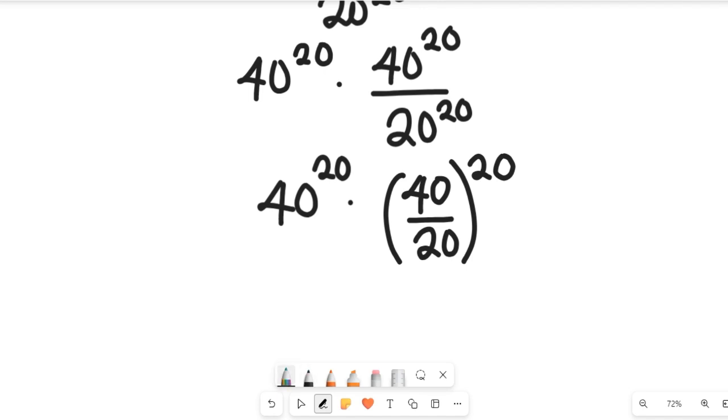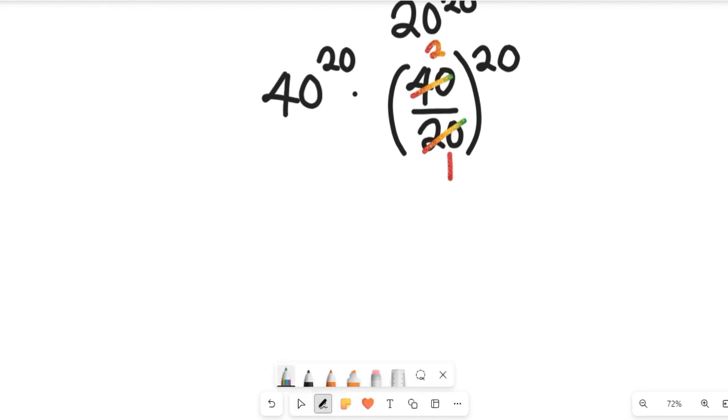With this, I can see that my 20 here can give me 1, 20 will give me 2, so 2 divided by 1 is going to give me 2. So on the left-hand side we are going to have 40 to the power of 20 multiplied by 2 to the power of 20.